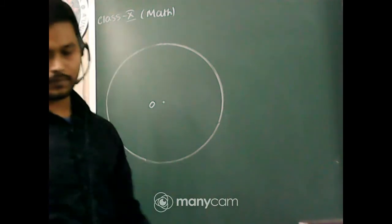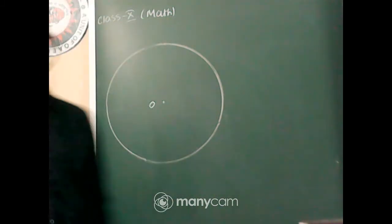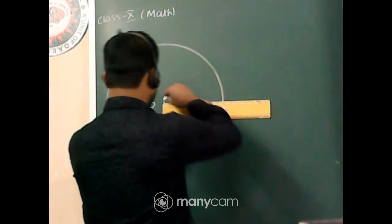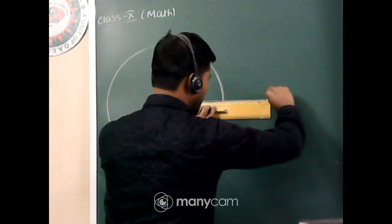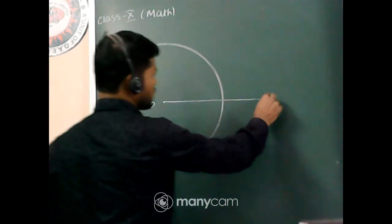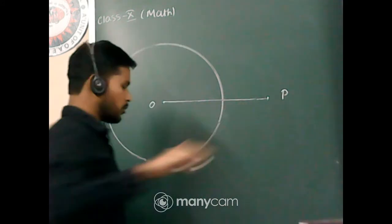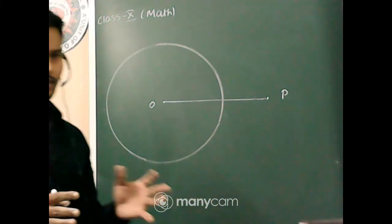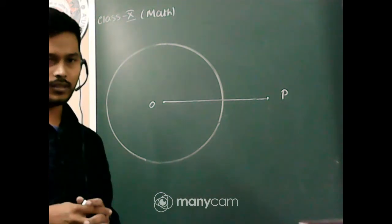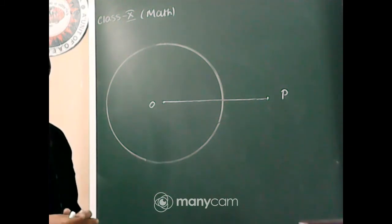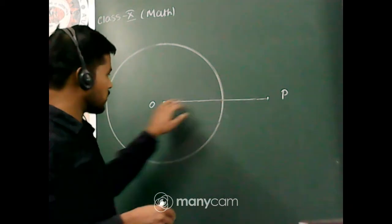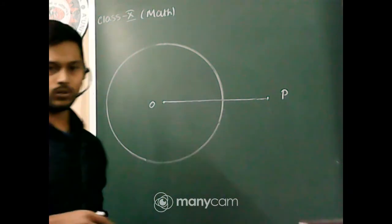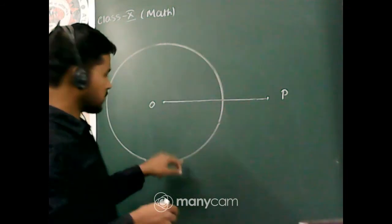Now take a point P which is 10 centimeters from the center O. Draw a line 10 centimeters long from O to P. My measurements on the board are approximate; you should take proper measurements. So OP is a line segment of length 10 cm, and from P we have to draw two tangents to the circle.